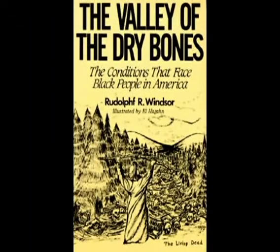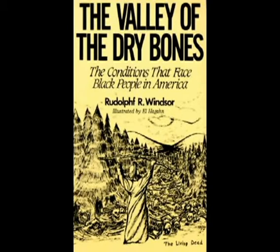In Rudolf R. Wintzer's The Valley of Dry Bones, he states: during the period between 1790 and 1860, the Democrats controlled the federal government for 50 years out of 70. During this period, the Democratic Party was the party of the slaveholders. Abraham Lincoln's Republican Party freed, quote-unquote, the slaves and began to give them civil rights.